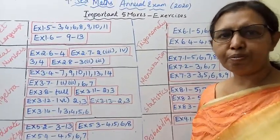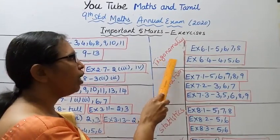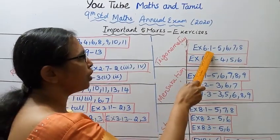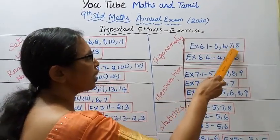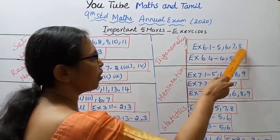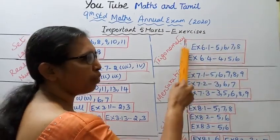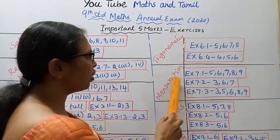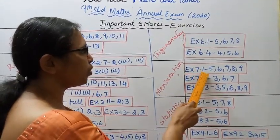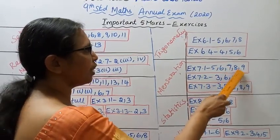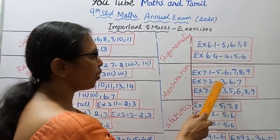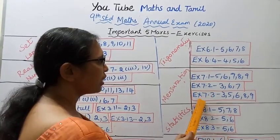Trigonometry. Exercise 6.1: problems 5, 6, 7, 8. Exercise 6.4: problems 4, 5, 6. Mensuration. Exercise 7.1: problems 5, 6, 7, 8, 9. Exercise 7.2: problems 3, 6, 7. Exercise 7.3: problems 3, 5, 6, 8, 9.